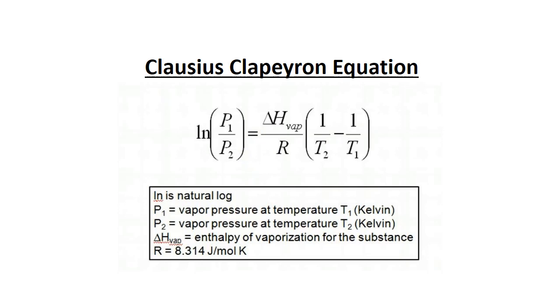The natural log of P1 by P2 equals the enthalpy of vaporization of that particular substance divided by the constant R, times 1 by T2 minus 1 by T1. So this is the whole equation.